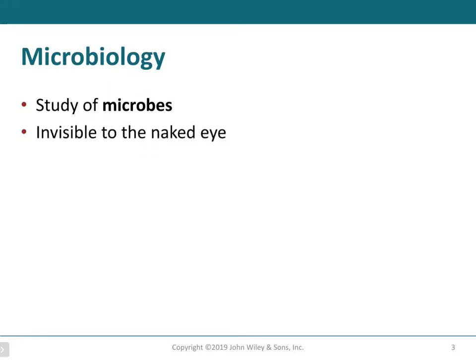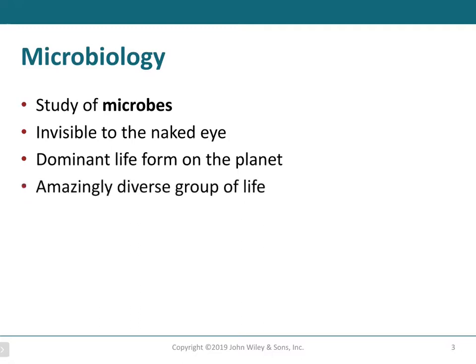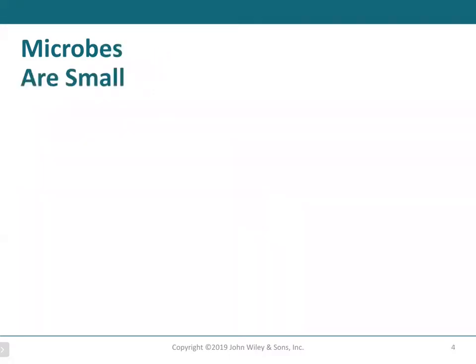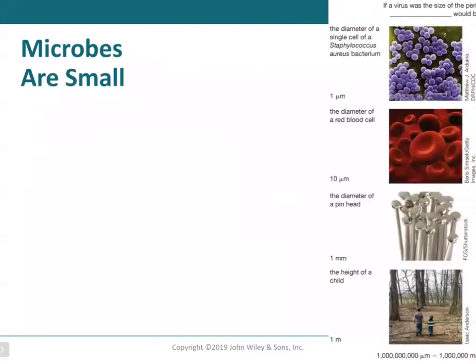These microbes are invisible to the naked eye. Contrary to what others believe, they're actually the most dominant life form on the planet because they're much more in terms of population than us, and also in terms of species. There are many microbes that are yet to be discovered and we still haven't characterized all of them because there are just too many. So they are a very diverse group of organisms. Although they are very diverse and very large in terms of population and numbers, they are very, very small.